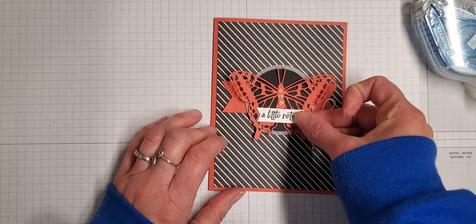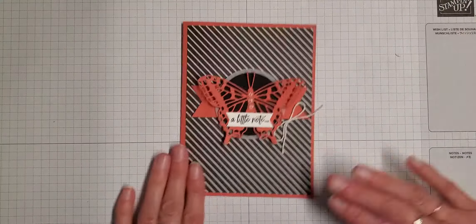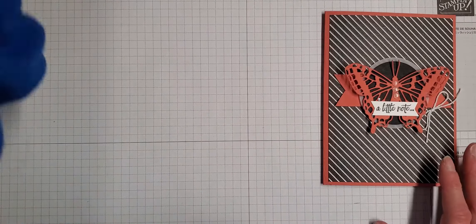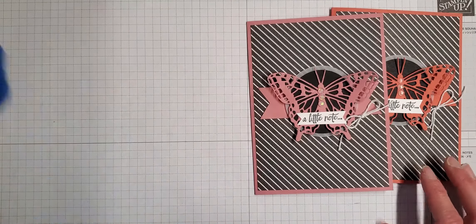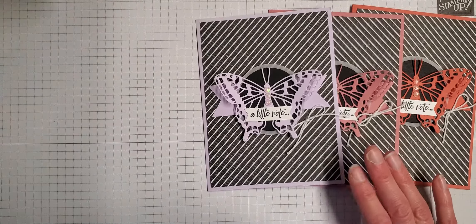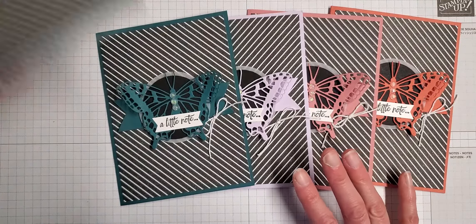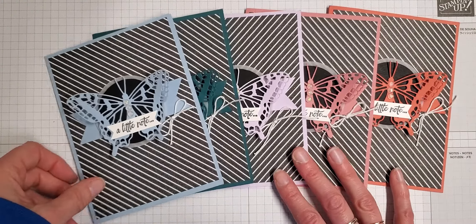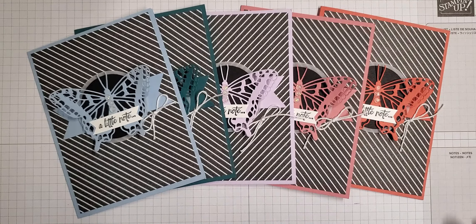So now I can show you all the finished versions and you can see all the colors. Here we have Terracotta Tile, Rococo Rose, Purple Posy, Pretty Peacock, and Seaside Spray. There you go, so those are the retiring colors that you'll want to grab ASAP.